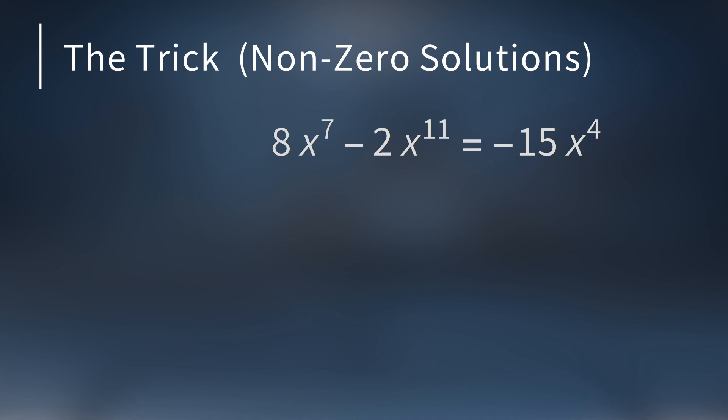The key to finding the non-zero solutions lies in one simple trick. And the best way to see this is with an example. Let's find all integer solutions to the Diophantine equation 8x⁷ - 2x¹¹ = -15x⁴. First get all terms on one side. Then rearrange them so the polynomial is in standard form.